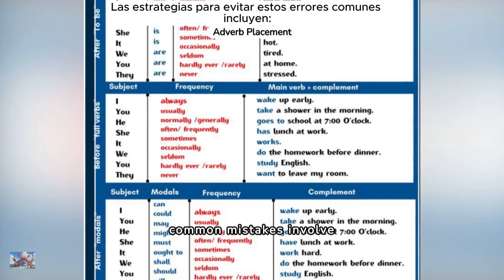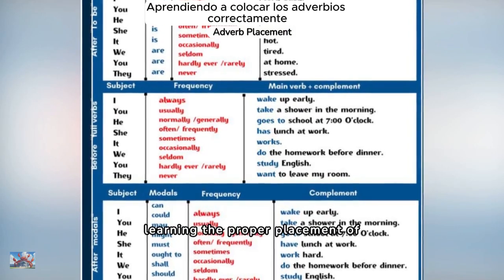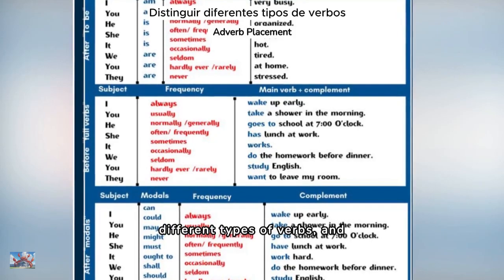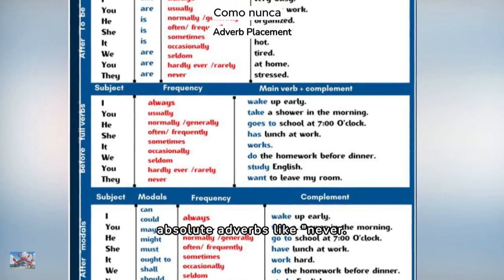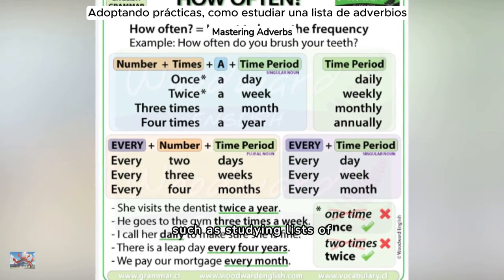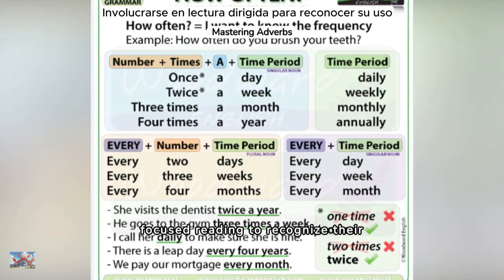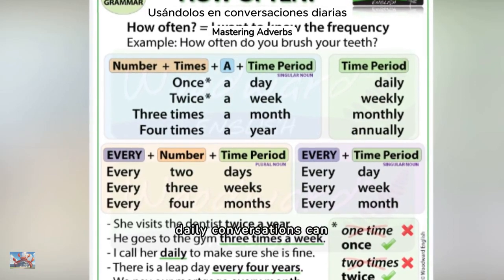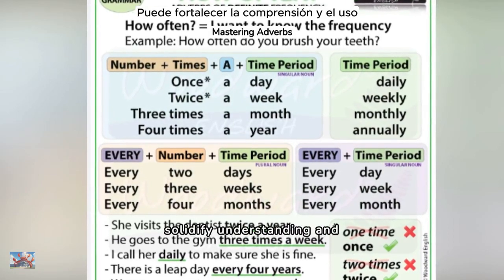Strategies to avoid these common mistakes involve learning the proper placement of adverbs, distinguishing between different types of verbs, and avoiding negatives with absolute adverbs like 'never.' Adopting practices such as studying lists of adverbs, engaging in focused reading to recognize their usage, and applying them in daily conversations can solidify understanding and usage.